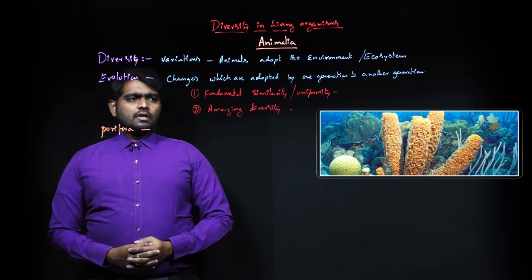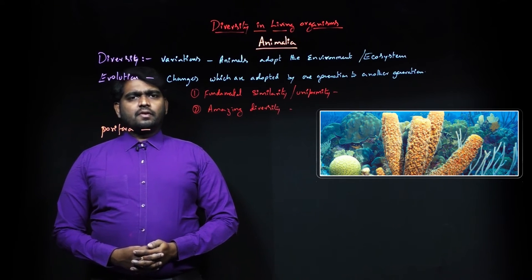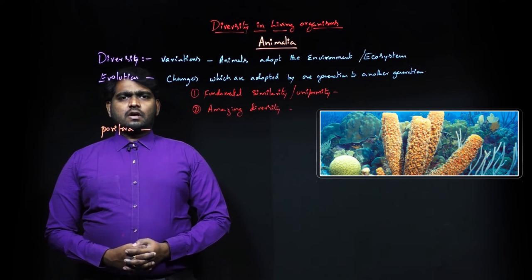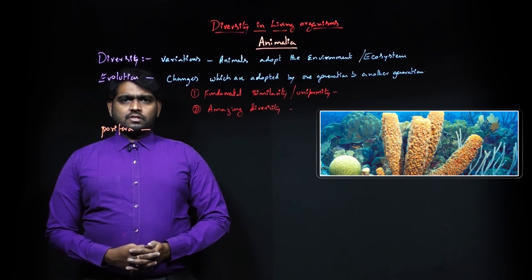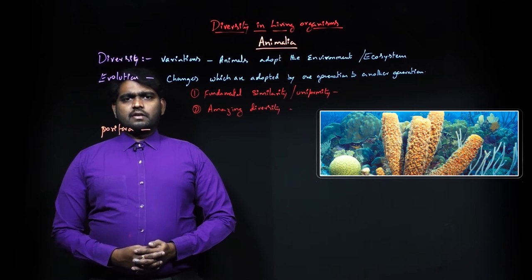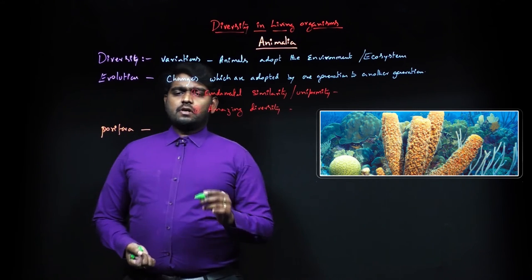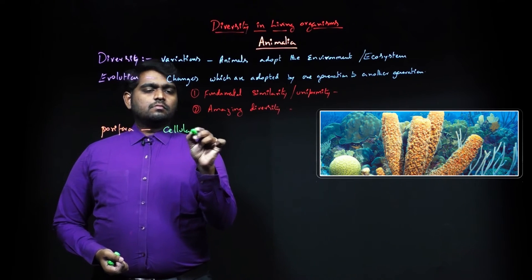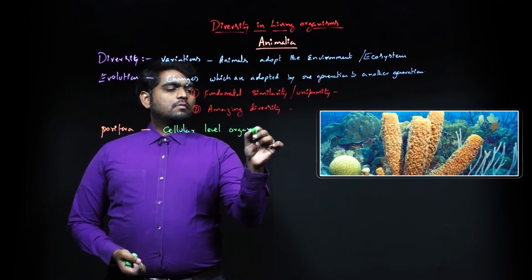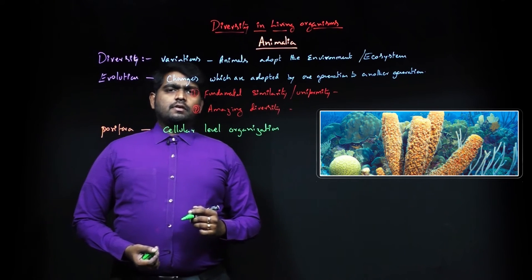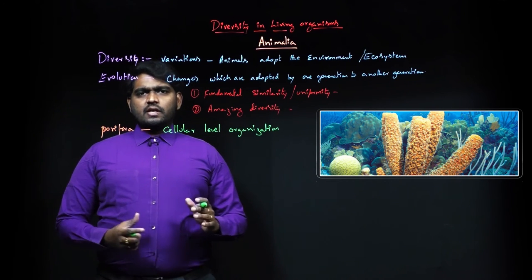The multicellular also have arrangement in cellular organization, tissue level organization, and organ system level organization. First we start with cellular level organization. In that first kingdom, the phyla that is Porifera, these are cellular level organization structure, that means loosely arranged cells.